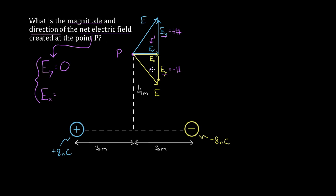These horizontal components will not cancel. How come? Because they're both pointing to the right. If one was pointing right and the other was left, the horizontal components would cancel, but that's not what happens here. These components combine to form a total component in the x direction that's larger than either one — in fact, it's gonna be twice as big because each charge creates the same amount of electric field in the x direction due to symmetry.